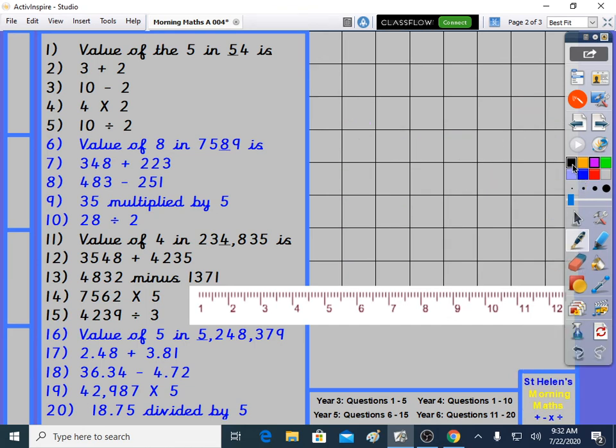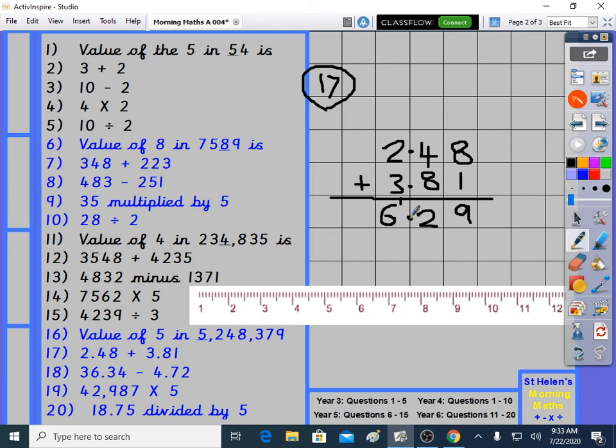Question 17. Looks a bit like money but it's not because it doesn't have the pound sign. 2.48 plus 3.81. Decimals, we're supposed to say them like 2.48 or 3.81. 8 plus 1 is 9. 4 plus 8 is 12. Carry the 1. 2 plus 3 plus a little 1 is 6. Plus makes things bigger. And I did get a big answer. 2 and a bit plus 3 and a bit is 6 and a bit.